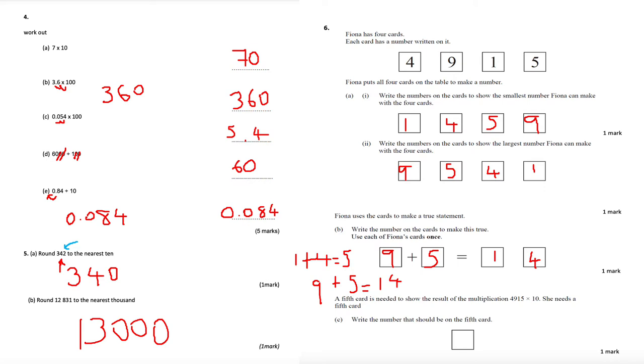A fifth card is needed for the multiplication 4,915 times 10. When I multiply by 10 I get 49,150, so the extra number needed is a zero — I need an extra zero card to make this number from this sum.